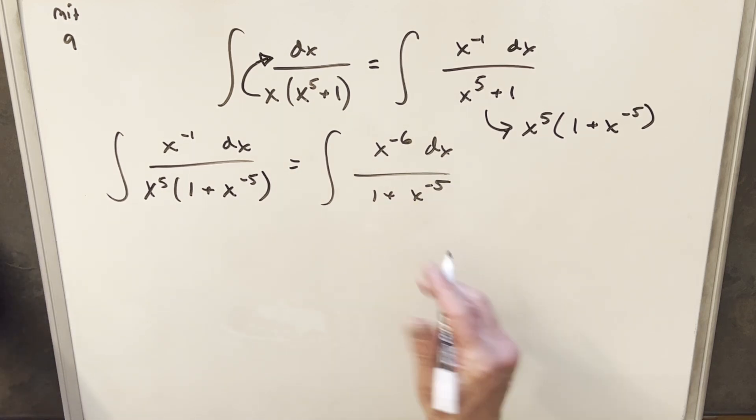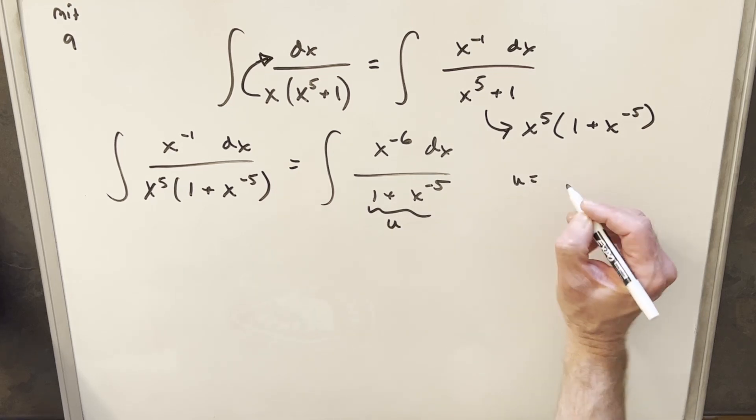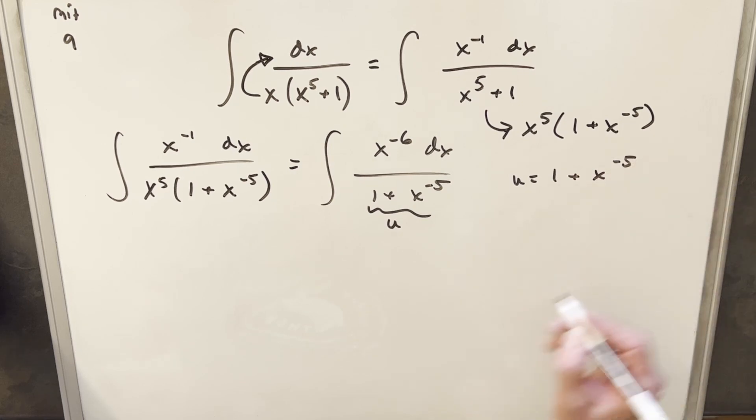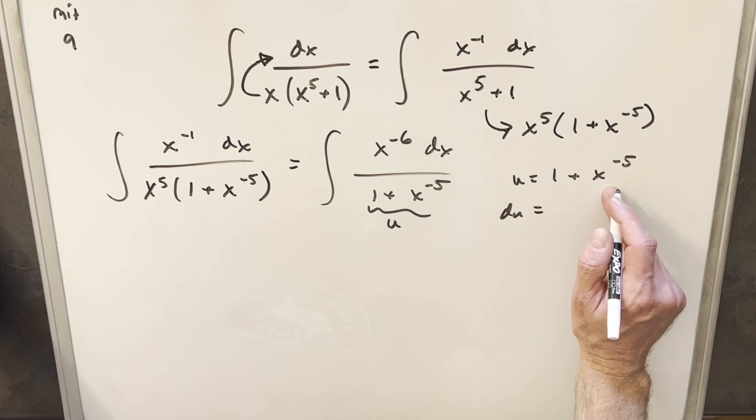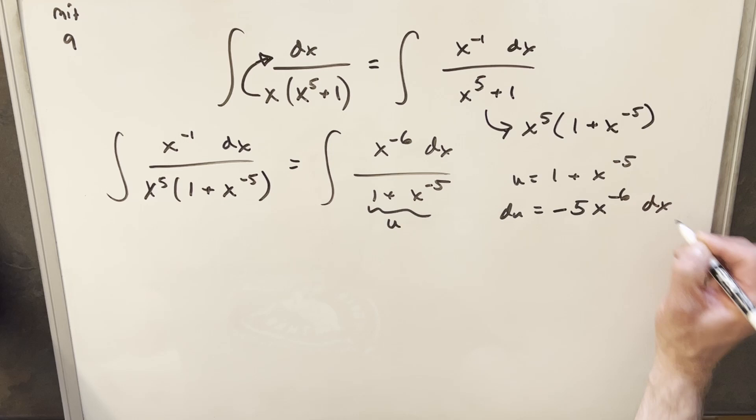And so now that we have it like this, I'm going to do my u substitution for the whole denominator. We'll make this our u. So we're going to say u equals 1 plus x to the minus 5. And then we'll take our derivative. The derivative of 1 is 0. Derivative here is just minus 5x to the minus 6 dx.